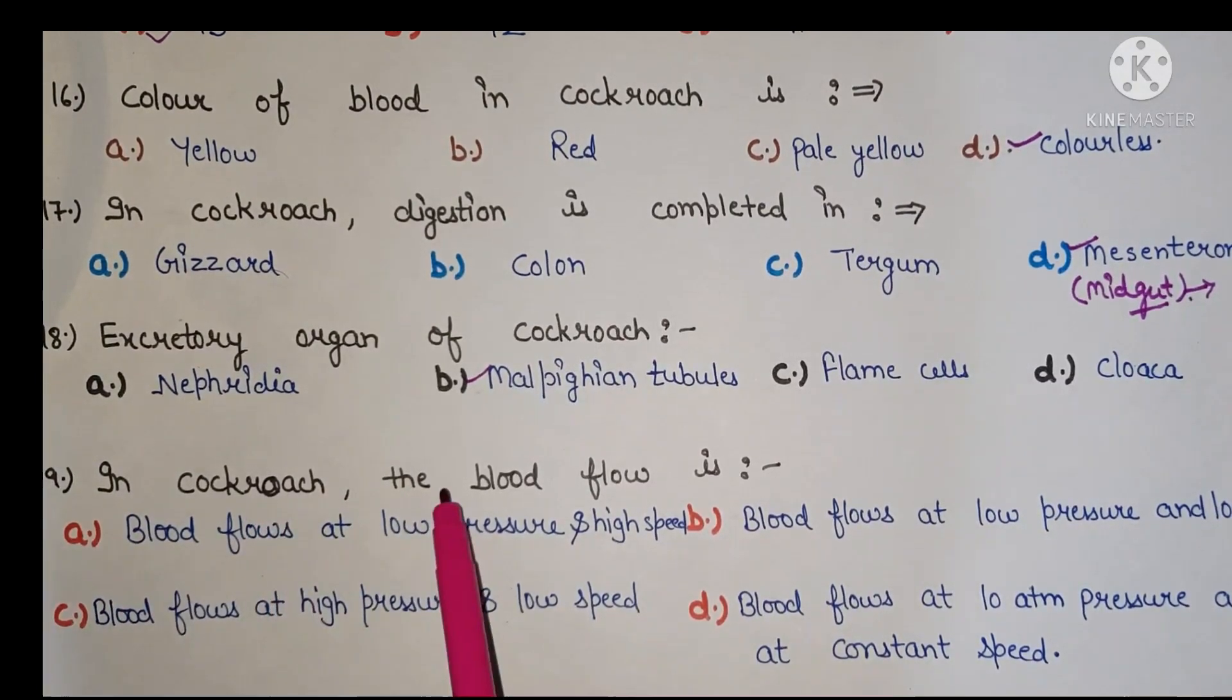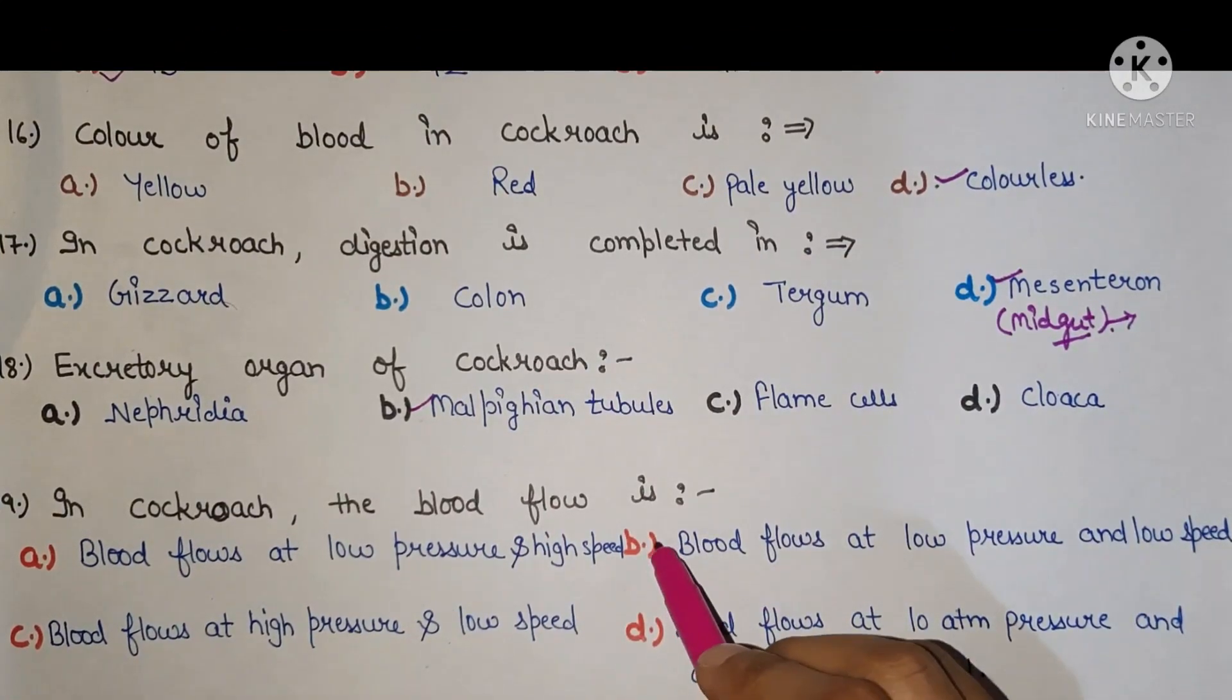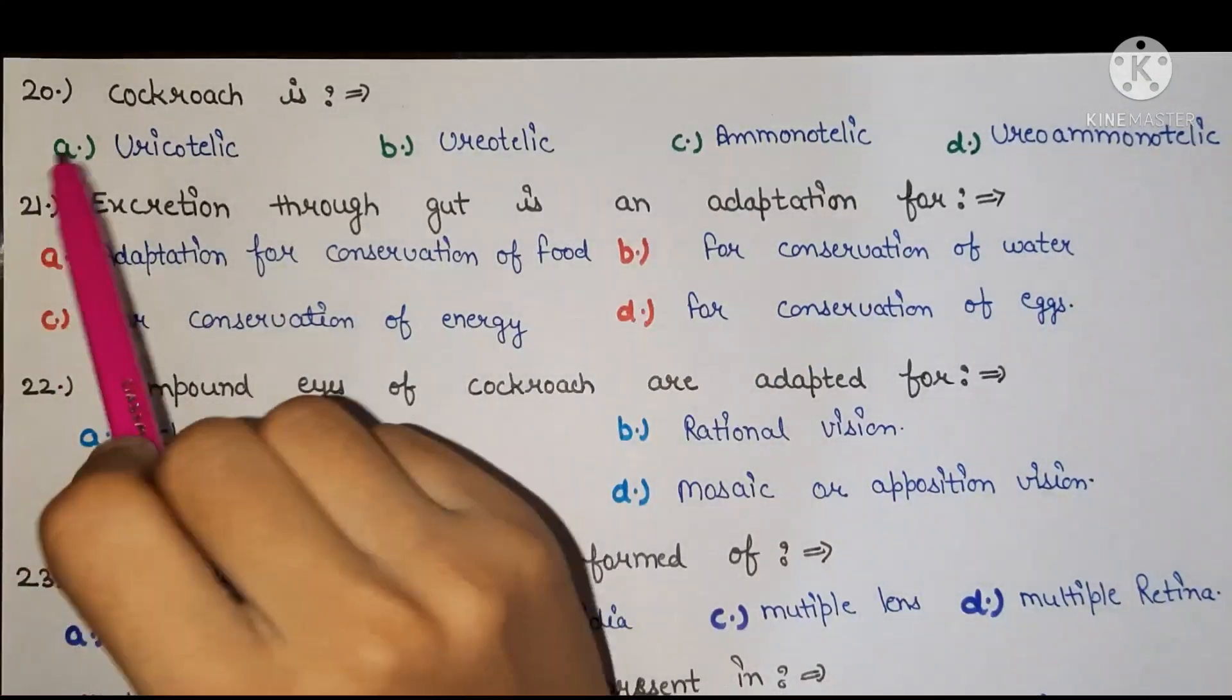Next, in cockroach the blood flow is, the right answer is blood flows at low pressure and low speed.